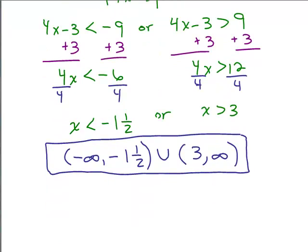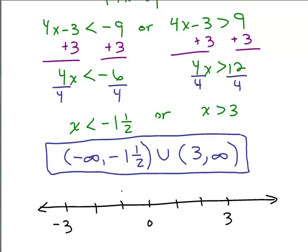And if you want to graph it, here's 0, here's negative 3 and positive 3. So if we want numbers less than negative 1 and a half, we would have to go right here at negative 1 and a half and go this way. And numbers to the right of 3, we would go that way. So that's what the graph looks like.